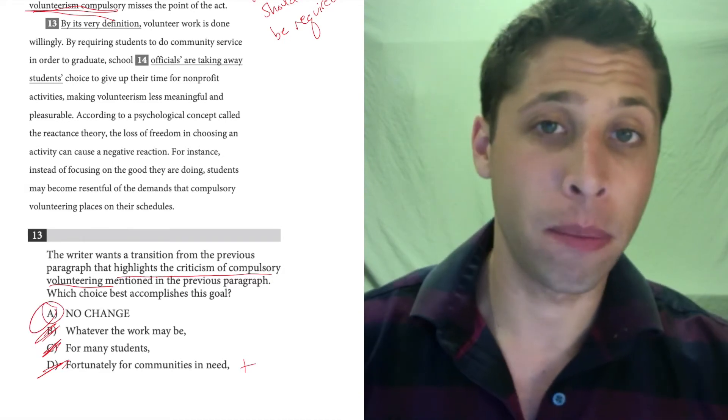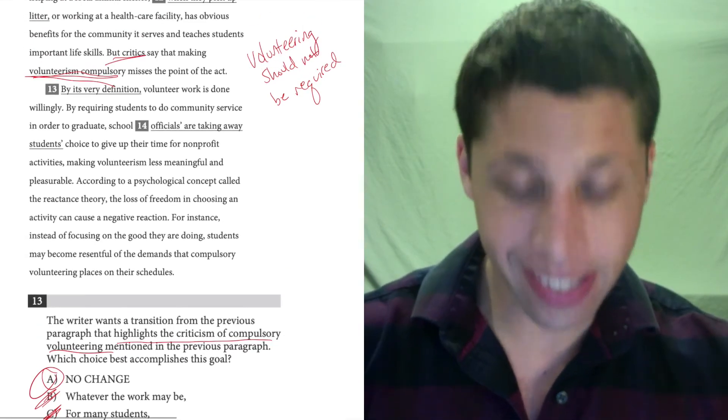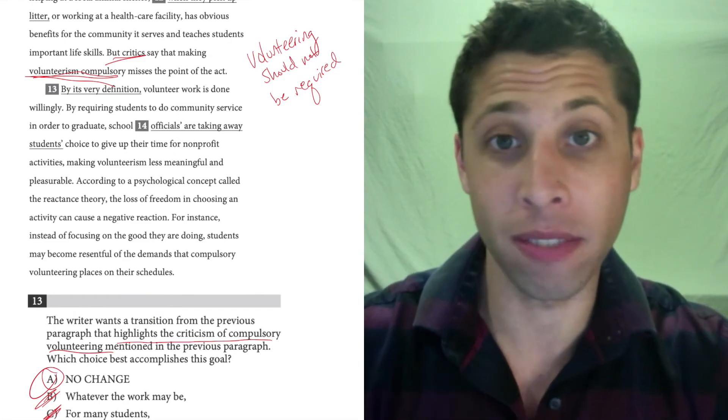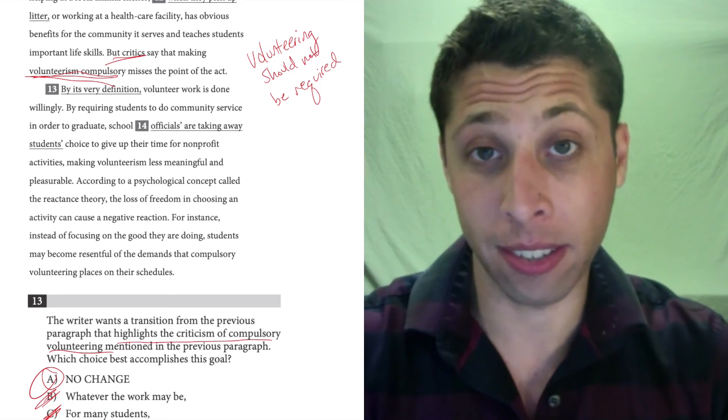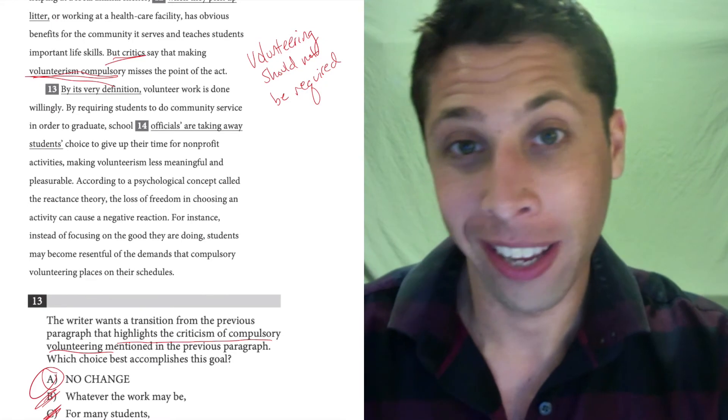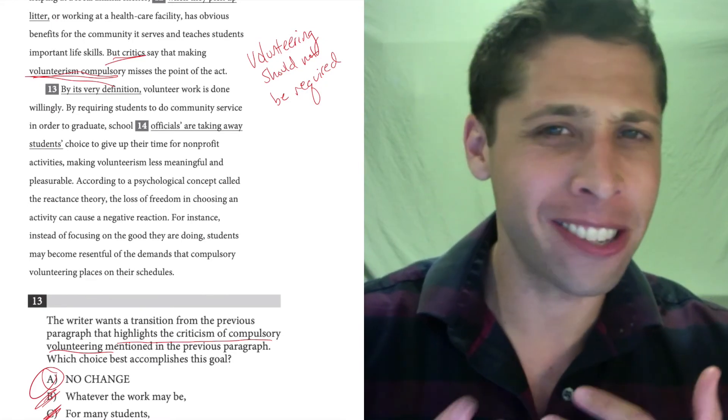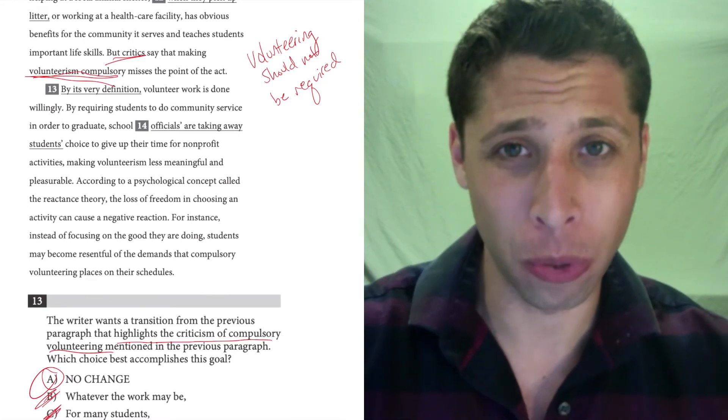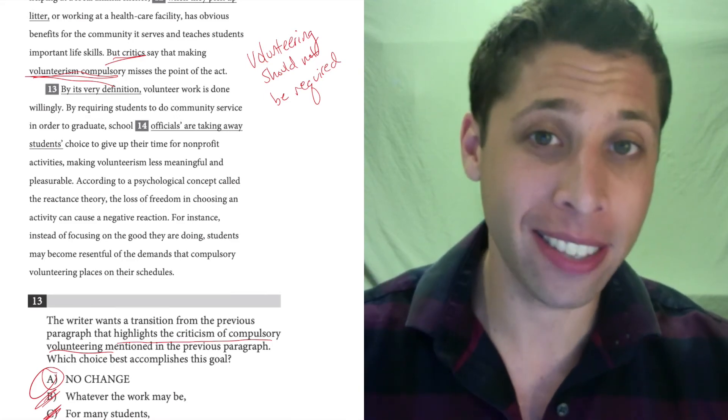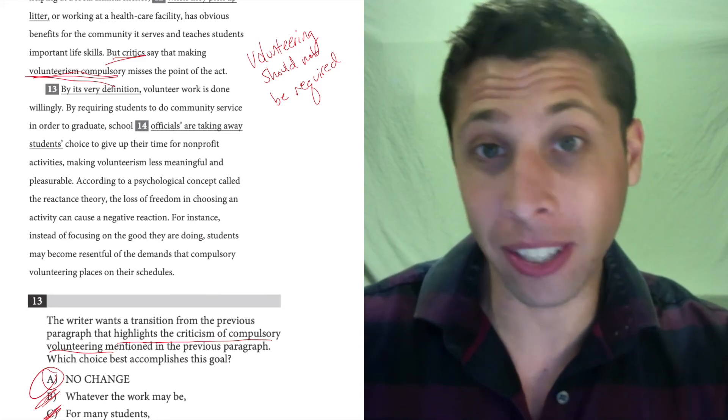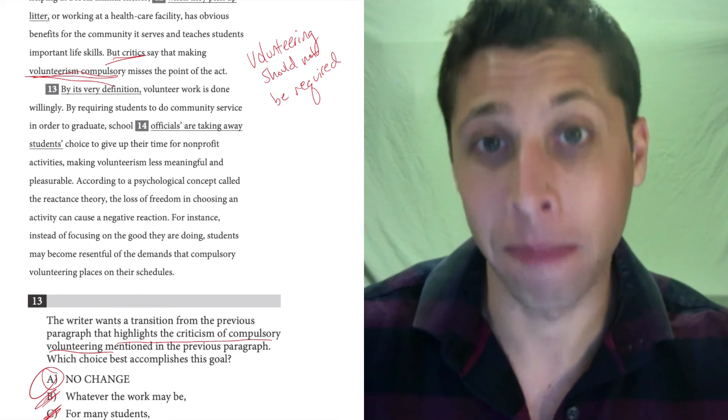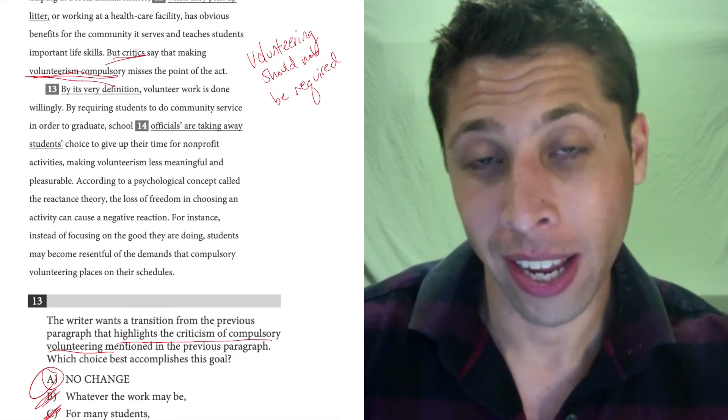So A is going to be right because it's really focusing us, narrowing our focus to this idea of what it means to volunteer. The criticism is that volunteering is something you choose to do, and yet it's required by schools. You're forced to do it. And so the next sentence kind of needs to hit that same point, and by its very definition, the definition of volunteering, it shouldn't be compulsory, mandatory, required. It's tricky. It's a hard question.